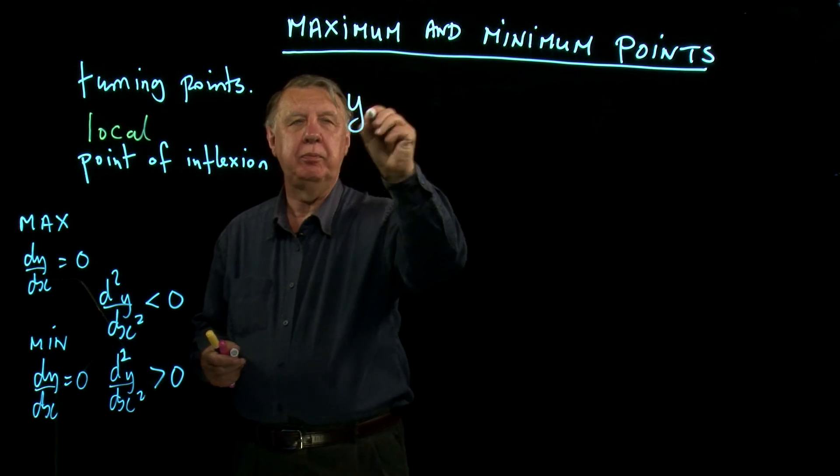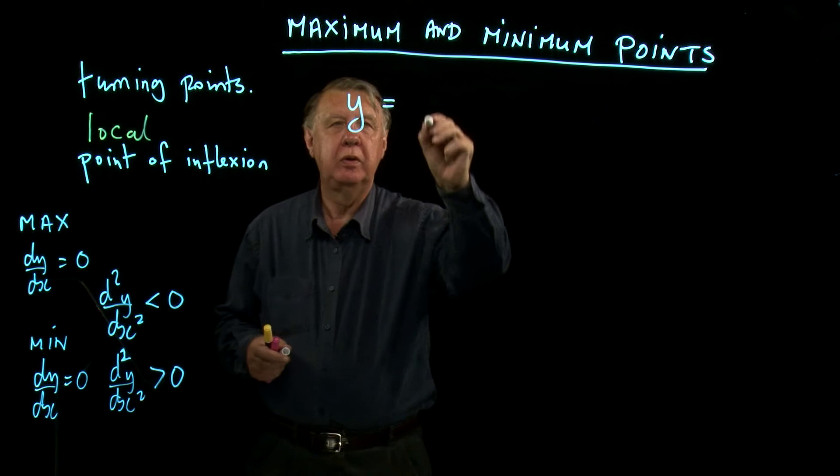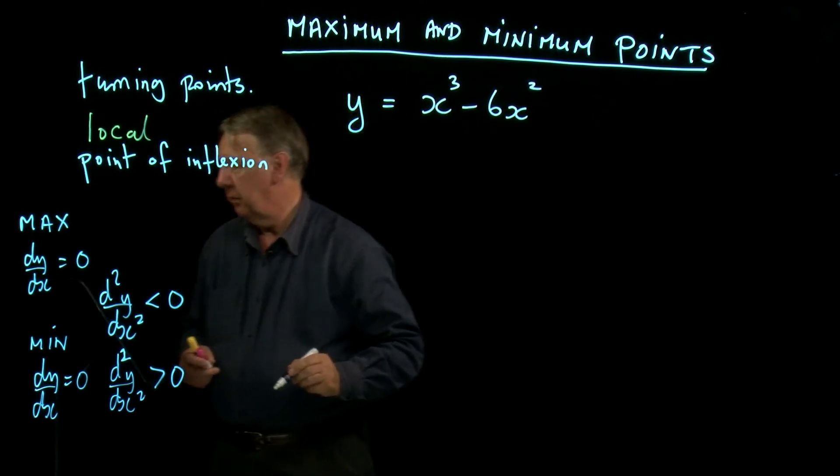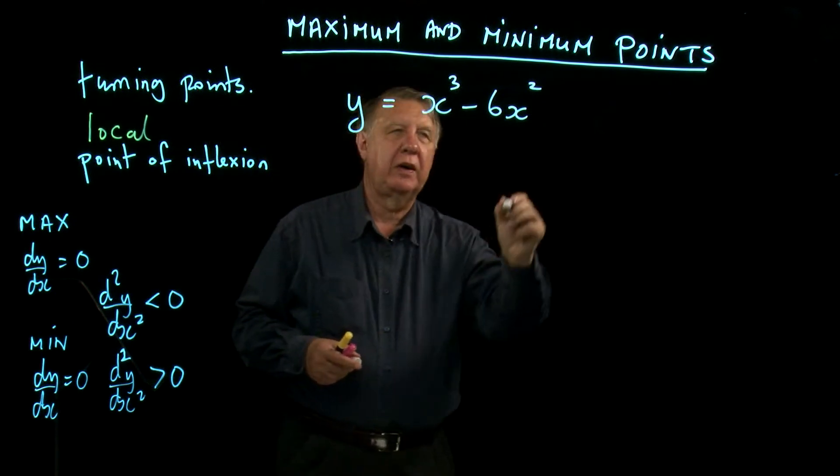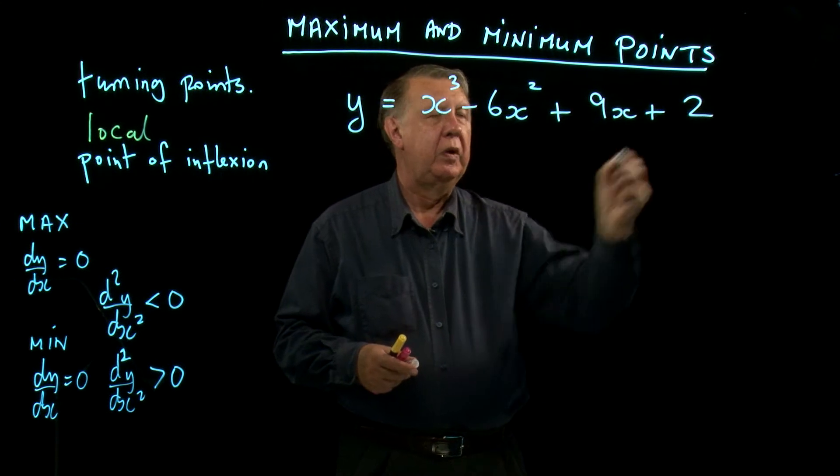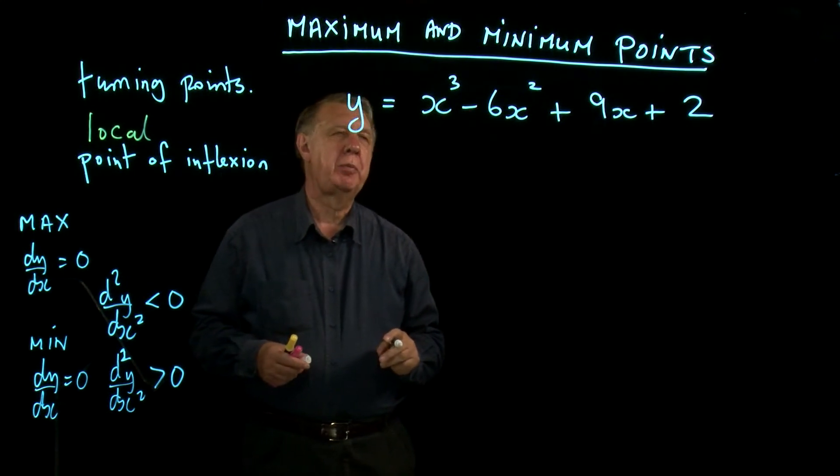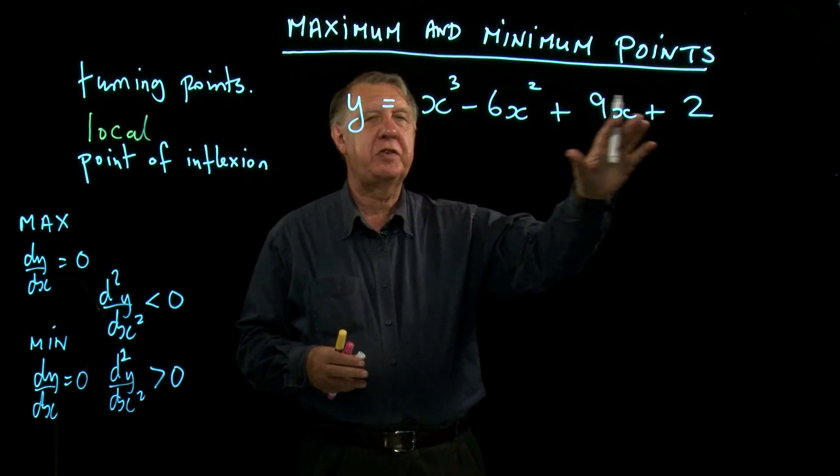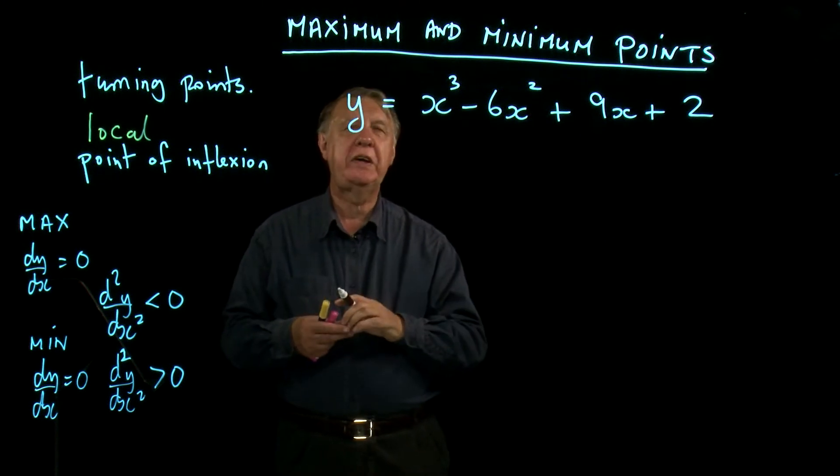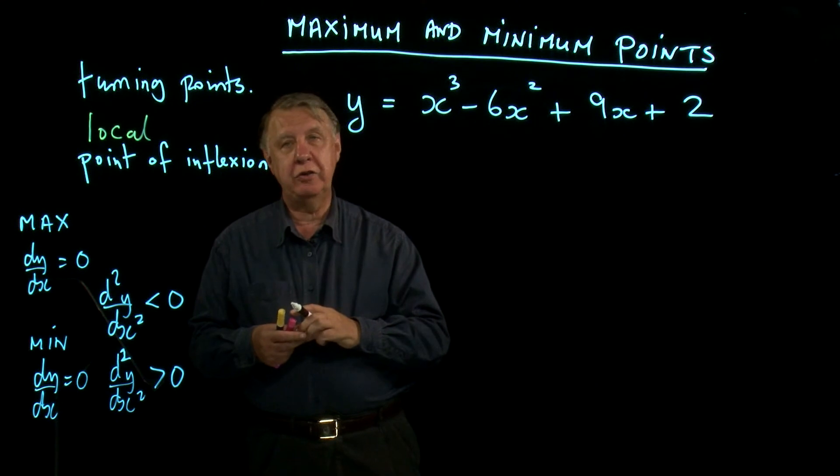Let's look at a function: y = x³ - 6x² + 9x + 2. So the question could easily be something like: find the coordinates of the turning points on the graph, distinguish between maximum and minimum, and then sketch the graph.